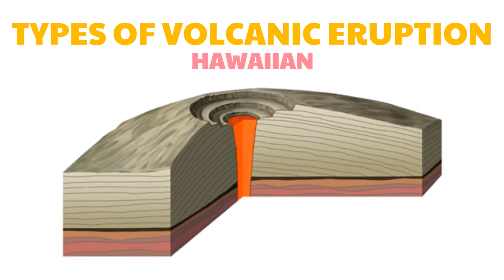The Hawaiian type is similar to the Icelandic variety. In this case, however, fluid lava flows from a volcano summit and radial fissures to form shield volcanoes, which are quite large and have gentle slopes.